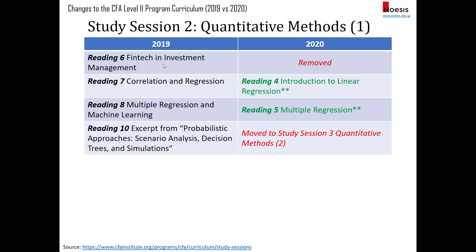For quants, they have removed reading six on fintech in investment management — it was only there for 2019 as a transition for those who didn't cover fintech at level one. For reading seven, correlation and regression, they changed the name to 'Introduction to Linear Regression.' Most topics and LOS are the same, but they removed the earlier LOS on covariance and hypothesis tests on the significance of the correlation.